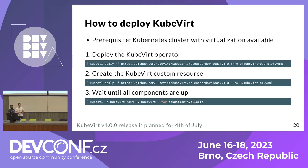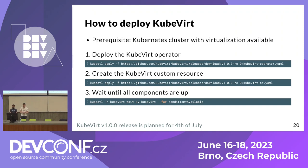How do you deploy KubeVirt? There's one prerequisite: you need a Kubernetes cluster which has virtualization enabled. The first step is to deploy the KubeVirt operator — you can do this with kubectl apply, applying the manifest from the KubeVirt releases page. The second step is to create the KubeVirt custom resource, which triggers the actual installation. Then you wait until the components are up using kubectl wait for the available condition of the custom resource. Note this is still using the release candidate 0 manifests, but version 1.0 will be released in July — please give it a try when it's released.